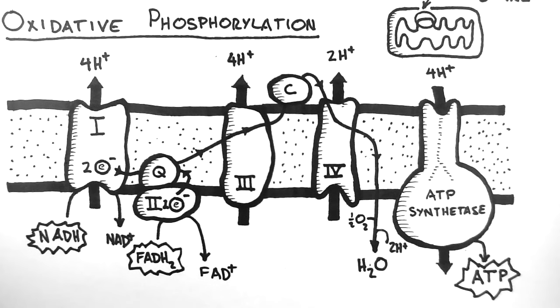So if you do the math, it turns out that one NADH will produce 2.5 ATP and one FADH2 will produce 1.5 ATP. And that's how a cell produces ATP for its energy supply.